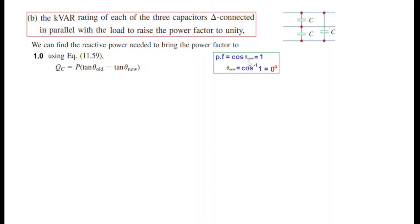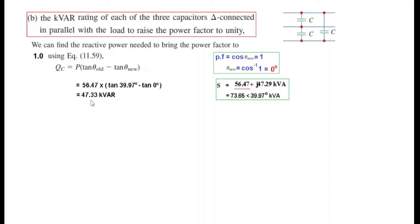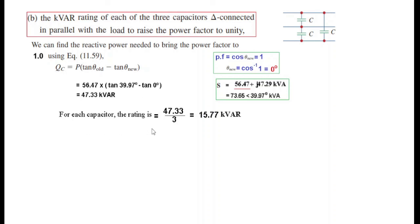The reactive power of the capacitor to correct to unity power factor: theta new = cos inverse of 1 = 0 degrees, theta old = 39.97 degrees, P = 56.47 kW. Total Qc = 47.29 kVAR. The kVAR rating of one capacitor is 47.29 divided by 3 = 15.77 kVAR.